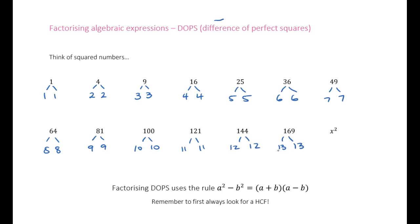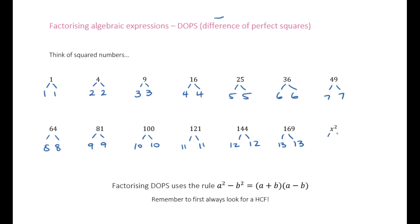With this last one here, 13 squared gives us 169. And x times x gives us x squared.